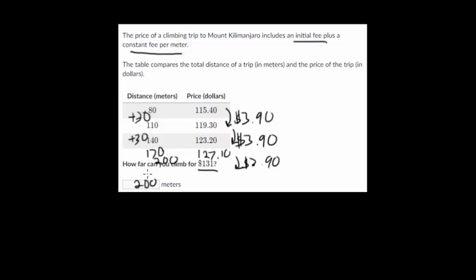So to answer the question, how far can you climb for $131 based on this table and the fact that every time you go 30 meters more, it costs an extra $3.90 plus the initial fee, then to answer this, to climb $131 worth, you would make it 200 meters. So let's move on to another problem.